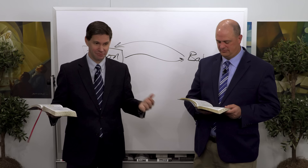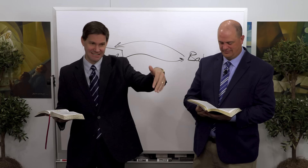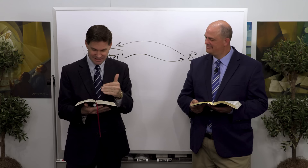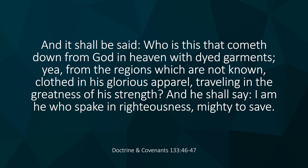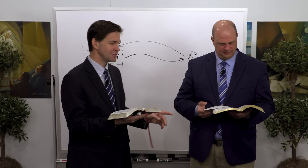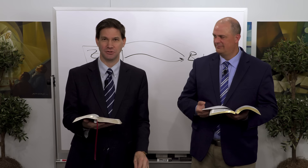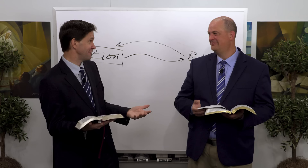After talking about the various places where Jesus will make himself manifest — on the Mount of Olives, in Zion, on the islands of the sea — you get verse 46: 'Who is this that cometh down from God in heaven with dyed garments, clothed in his glorious apparel, traveling in the greatness of his strength?' And he shall say: 'I am he who spake in righteousness, mighty to save.' He didn't say mighty to destroy. He does have that power, but he emphasizes here that he is mighty to save.